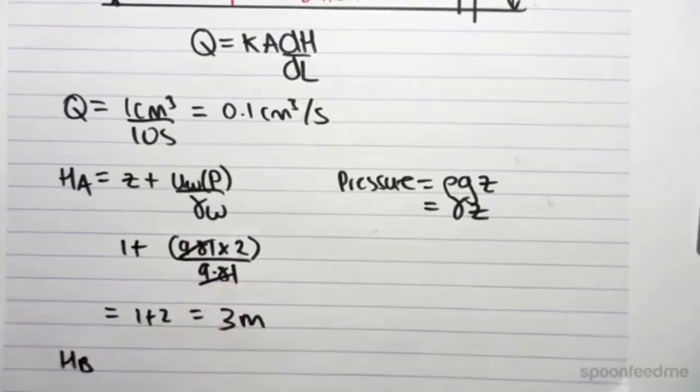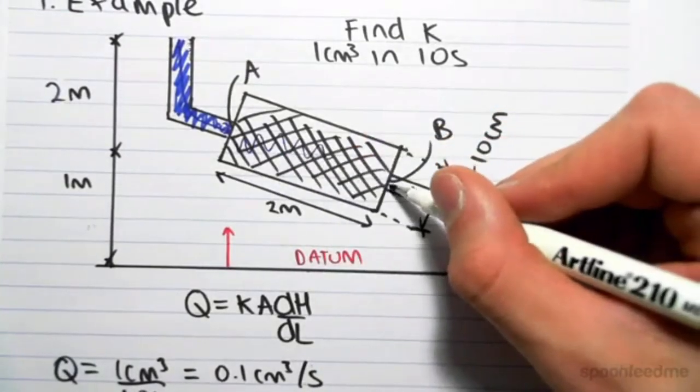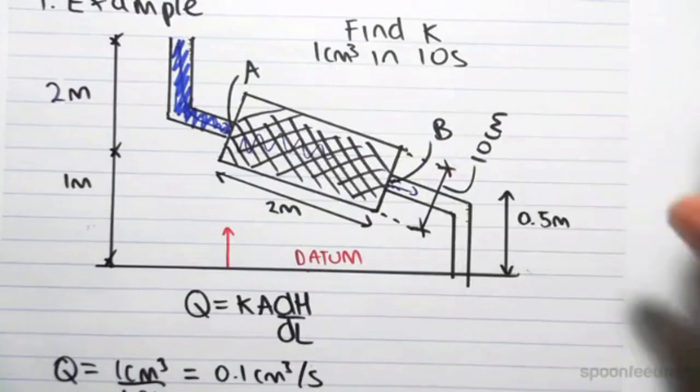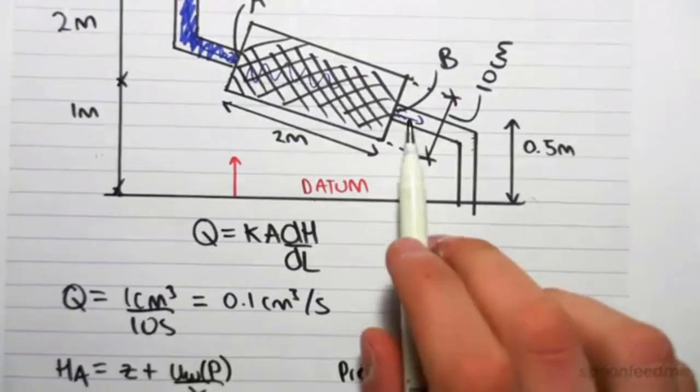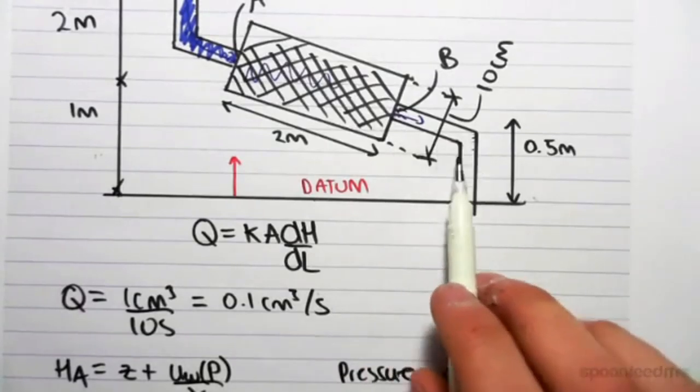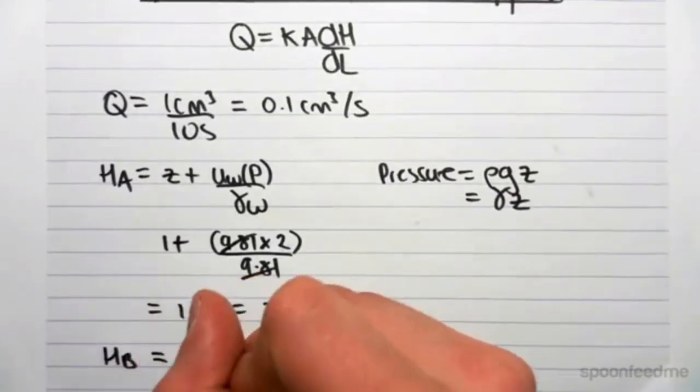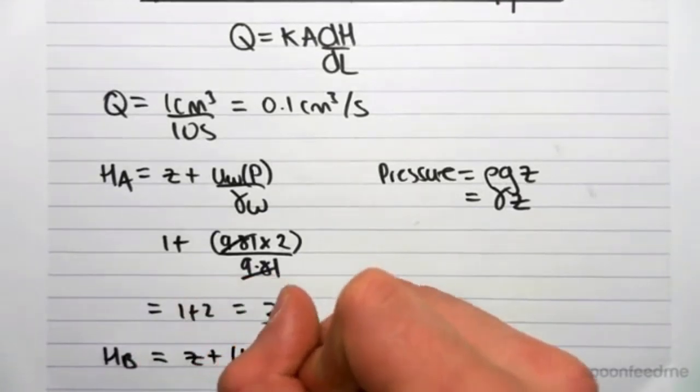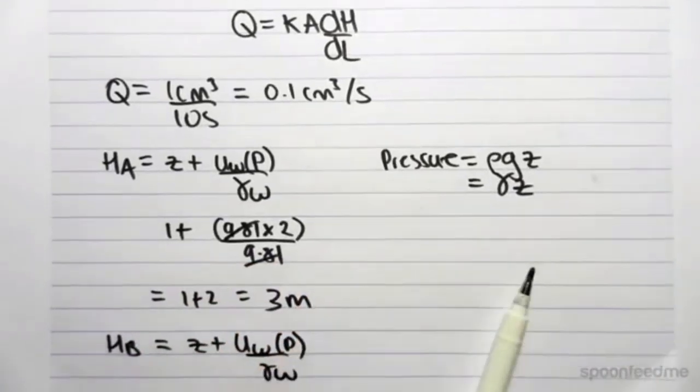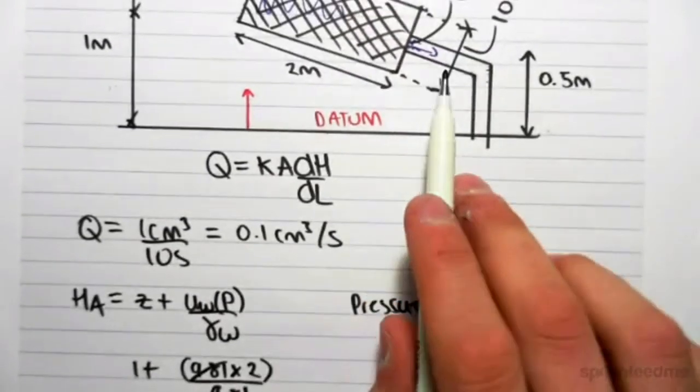The head at B... Now because this water is taking its time to flow through, it's going to be just dribbling out this end. So there's actually going to be no buildup of pressure due to the water. The only thing that's going to cause flow is the elevation.